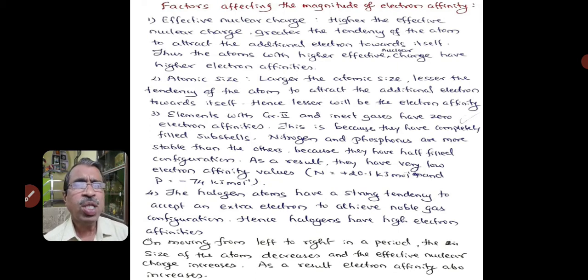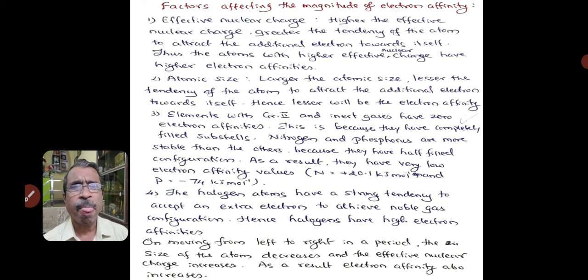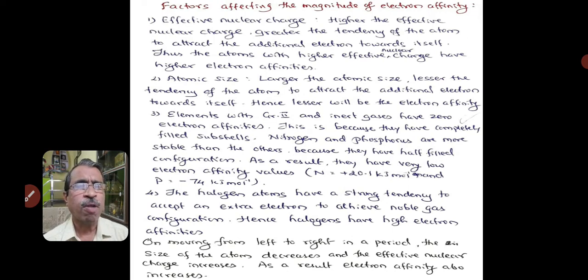Halogen atoms have a strong tendency to accept an extra electron to achieve noble gas configuration; hence, halogens have high electron affinities. On moving from left to right in a period, the size of the atom decreases and the effective nuclear charge increases. Therefore, electron affinity also increases.